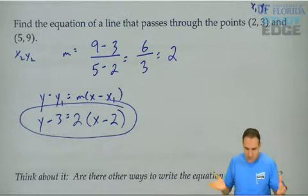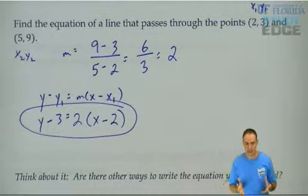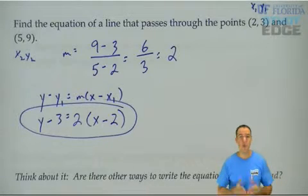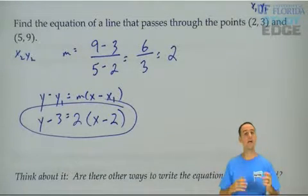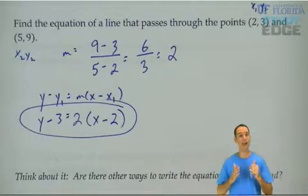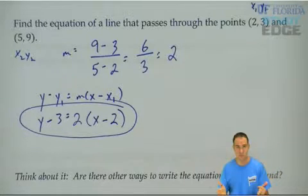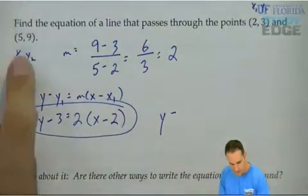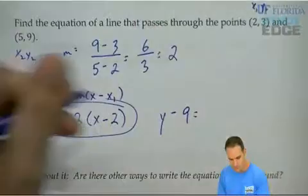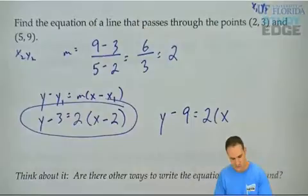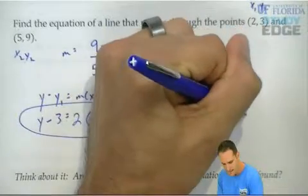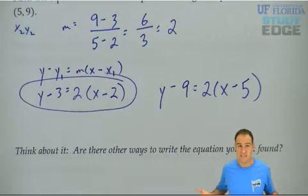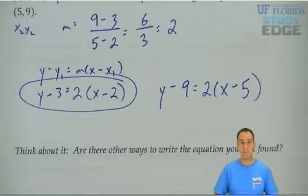But again, are there other ways to write the equation you just found? Yes, we can use the other point if we want to. We could have used the other point and got another equation for the line. But remember, they're actually all the same equation. If I were to have used the other point, I would have y minus 9 equals my slope times x minus my x coordinate. This is the same line. Let me show you. It is the same exact equation, just written in a different form.